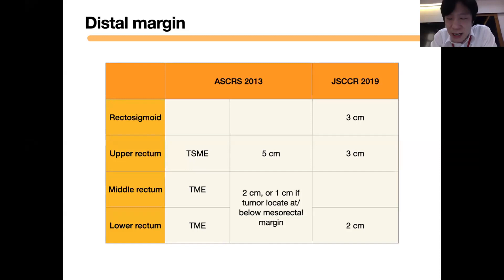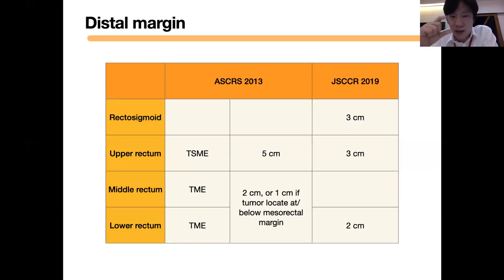In ASCRS guidelines, if the tumor is located at or below a certain level, the recommendation is to shorten the distal margin to one centimeter.